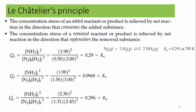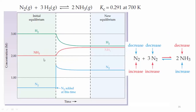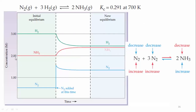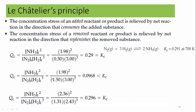Let's look at a practical numerical example using the same reaction. The initial equilibrium concentrations were: N₂ = 0.5 M, H₂ = 3 M, and NH₃ approximately 1.98 M. Substituting these values gives Kc = 0.29, confirming this equals the equilibrium constant of 0.291.